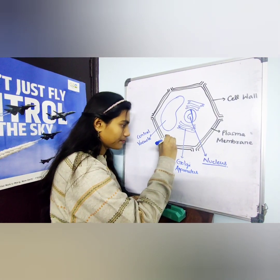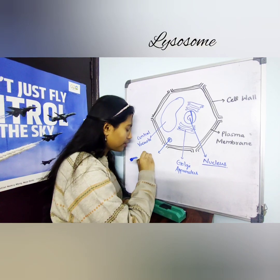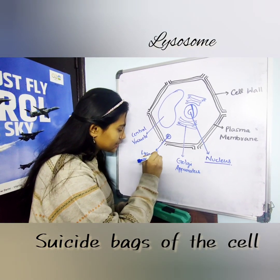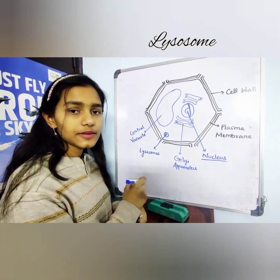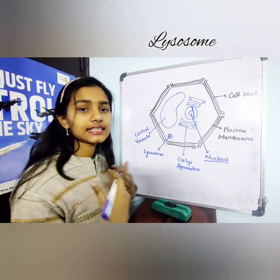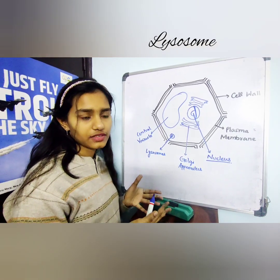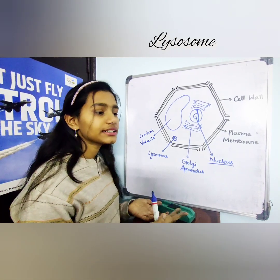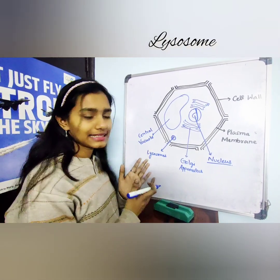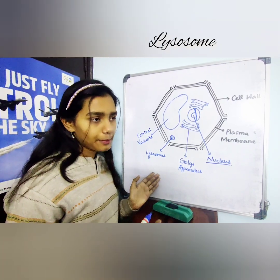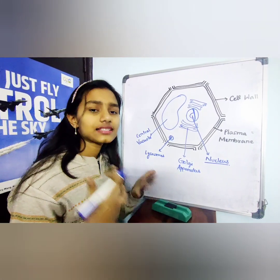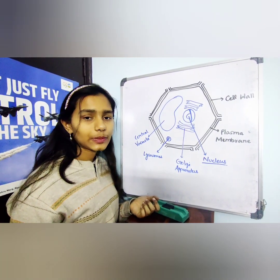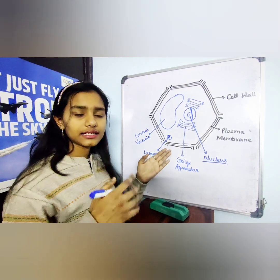The next organelle is the lysosome. Lysosomes are known as the suicide bags of the cell. It consists of digestive juices that help in digesting its own cells — that's why it's called the suicide bag of the cell. They are also the scavengers of the cell because they help in removing the dead and waste products present in the cell. Once the cell gets ruptured or damaged, the lysosomes burst up and the digestive enzymes present eat the whole cell.